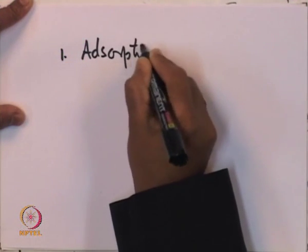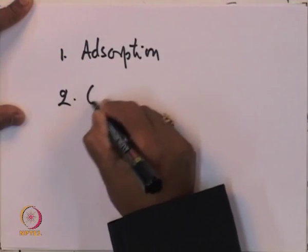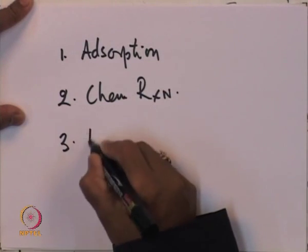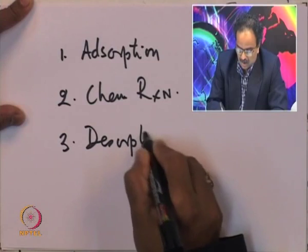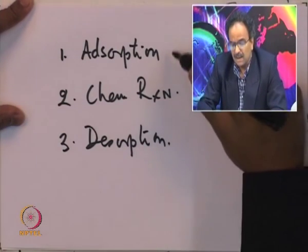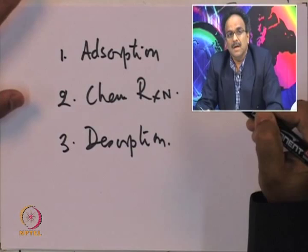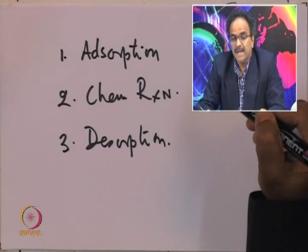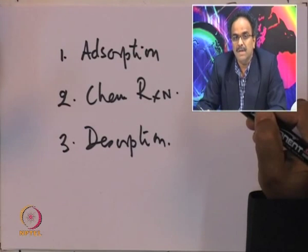The rate can be controlled by a chemical reaction, or it can be the adsorption or the desorption. So there are three distinct steps: adsorption, surface chemical reaction, and desorption. We wrote down an algorithm as to which one of these steps controls the overall rate and based on that, how to derive the rate equation.